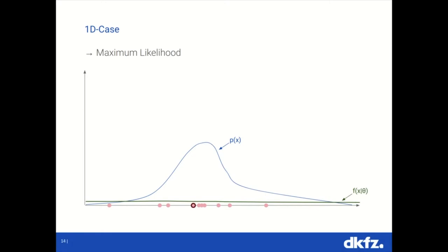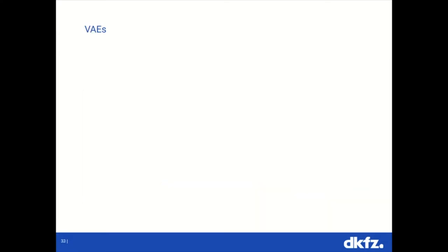How does that work? Basically, for each data sample, we now increase or maximize the likelihood. We do this for multiple data samples or all data samples, so that in the end, hopefully, our likelihood function captures the data distribution. And one very popular way to do this, especially with images, are VAEs.